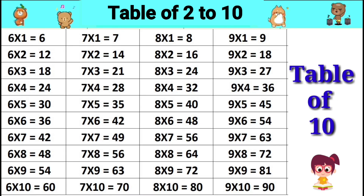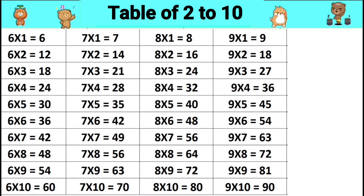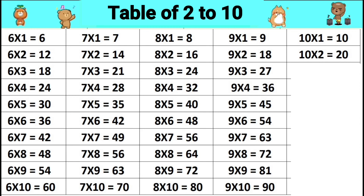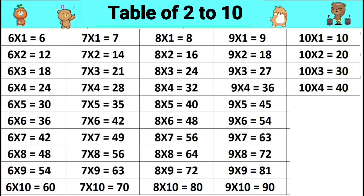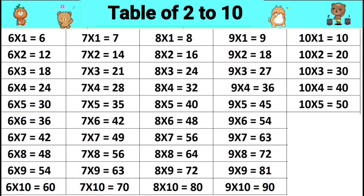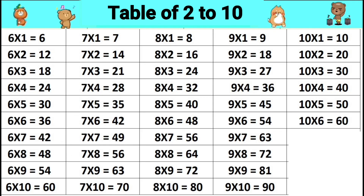Table of ten. Ten ones are ten. Ten twos are twenty. Ten threes are thirty. Ten fours are forty. Ten fives are fifty. Ten sixes are sixty.